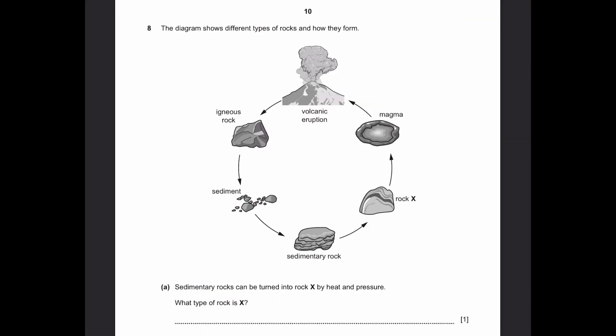Question 8. The diagram shows different types of rocks and how they form. First, due to volcanic eruptions, igneous rocks are formed. Then they become sediments to form sedimentary rocks. Then they form rock X, and then they turn into magma, and then again volcanic eruptions, and then continue the cycle. Part A. Sedimentary rocks can be turned into rock X by heat and pressure. What type of rock is X? The only three types of rocks, two of them are given, the last one's metamorphic rocks.